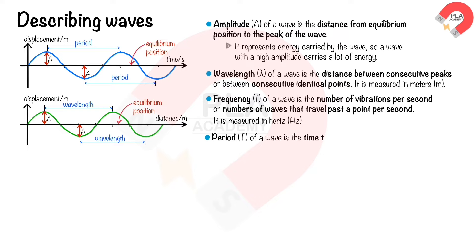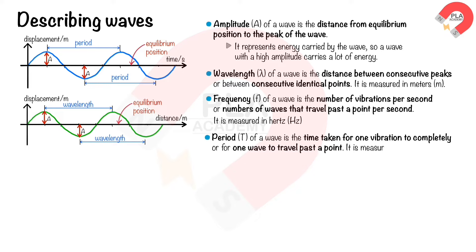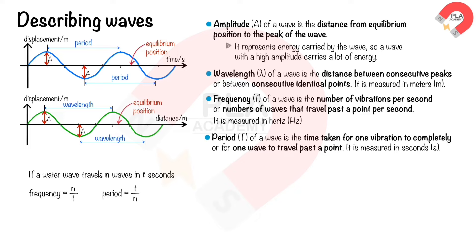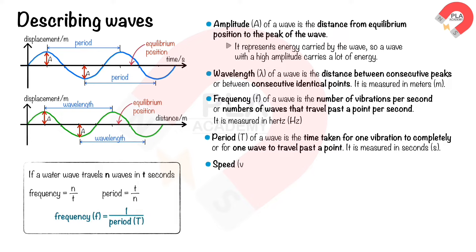Period, T, of a wave is the time taken for one complete vibration, or for one wave to travel past a point. It is measured in seconds. If a water wave travels N waves in T seconds, its frequency is N divided by T, and its period is T divided by N. Therefore, frequency equals 1 divided by period.